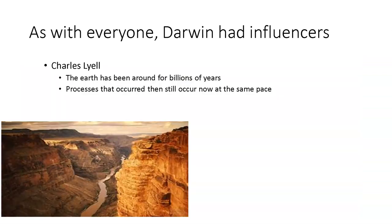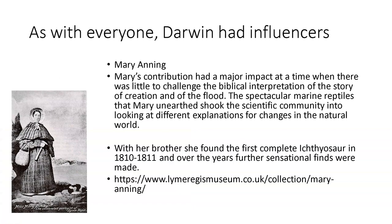Not only Linnaeus and Lamarck, but Charles Lyell influenced Darwin as well. One of the things on my bucket list is to visit the Grand Canyon — the Colorado River snakes through it. According to evolution, it took millions of years for the Colorado River to form the Grand Canyon. Some Christians agree; some would argue the flood did it very fast. Charles Lyell argued that the Earth has been around for billions of years and that processes that occurred then still occur now at the same pace. Darwin knew about his work and thought: if the Earth changes over time, why can't life change as well?